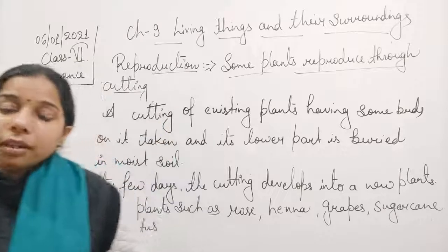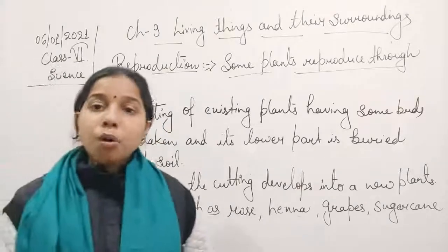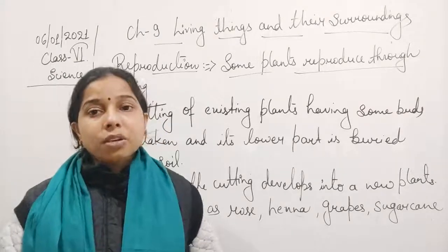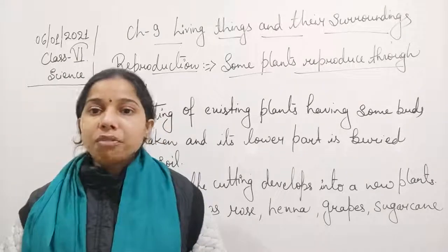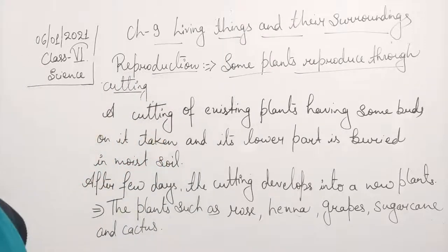So this is what it is about reproduction — how reproduction occurs in animals as well as in plants. Thank you.